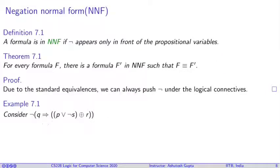For example, take this formula: ¬(q ⇒ ((p ∨ ¬s) ⊕ r)). Here there is a negation sitting on top and there is a symbol implication. We push this negation inside, double negation gets automatically cancelled, and you get q ∧ ¬((p ∨ ¬s) ⊕ r).